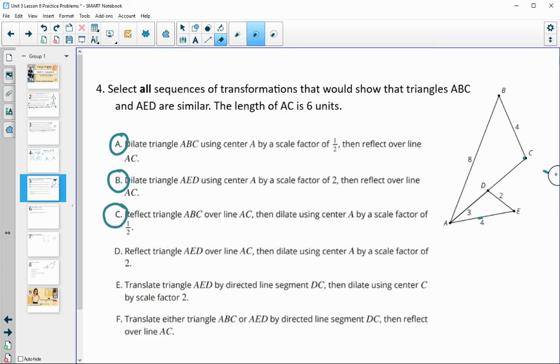And then a similar idea here, but using the smaller triangle. So D is saying if we took the smaller triangle, and first we dilated it by a factor of 2, so doubled its size, and then, or sorry, no, this one's saying reflect first. Okay, so take this triangle here and reflect it first, then double the size. And so that one would work as well.